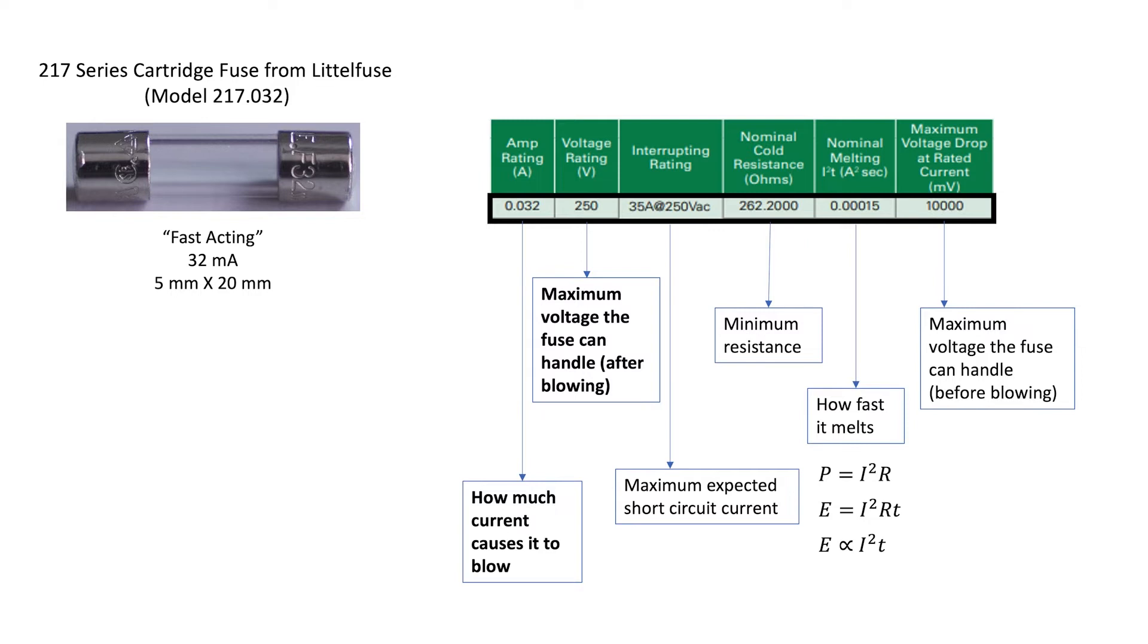The last parameter here is the maximum voltage drop at the rated current. This is basically the maximum voltage the fuse can handle before blowing, rather than after. V equals IR, and a fuse is a resistor. So if you take the current rating of the fuse, 32 milliamps, and you multiply it times its resistance, 262 ohms, you'll get 8.4 volts or so.